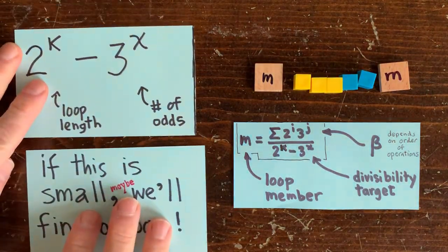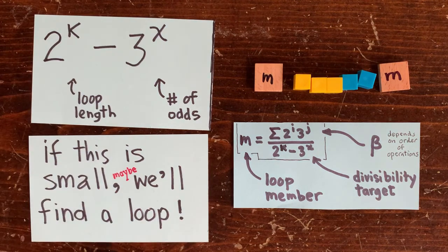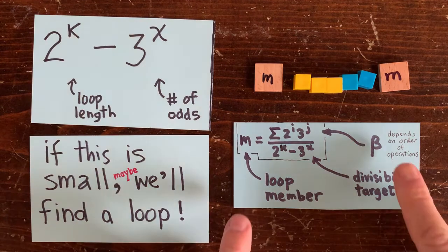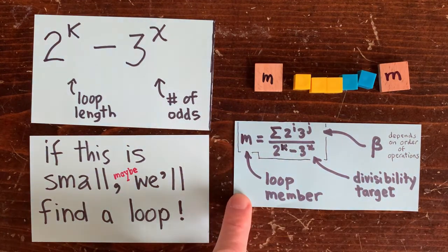and the number of yellow upmoves, x. If this denominator is small, there's a good chance that a random numerator is going to divide evenly, which means there's a good chance to find an integer loop.